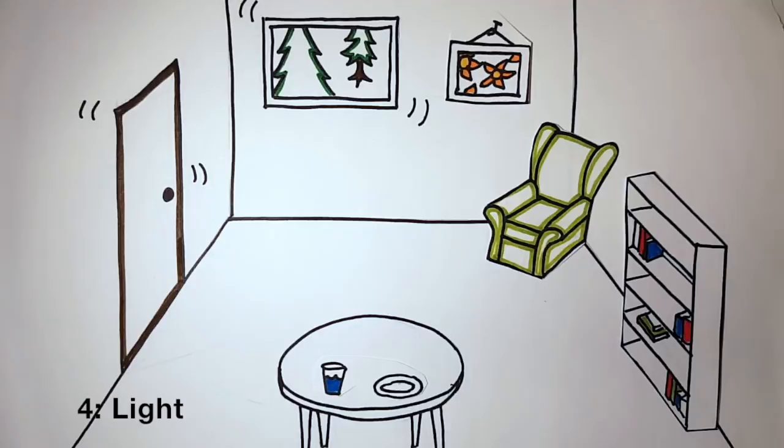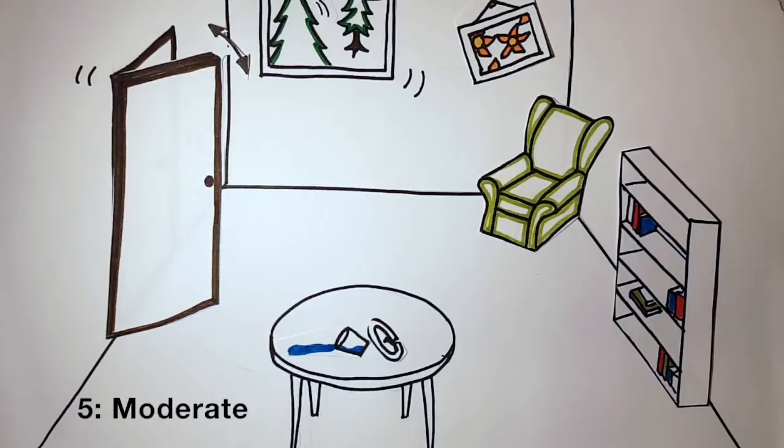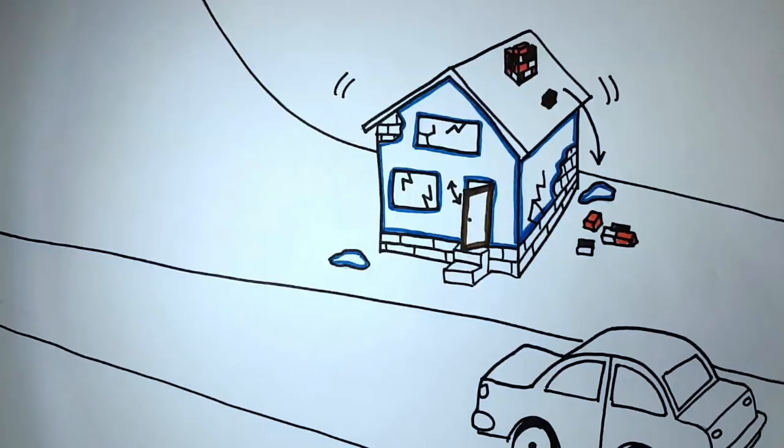Level 5: Moderate shaking will cause trees to sway, cups and dishes to shift and break, and doors to swing back and forth. Level 6: Strong shaking will make it hard to walk. Objects will fall off shelves and windows may crack.